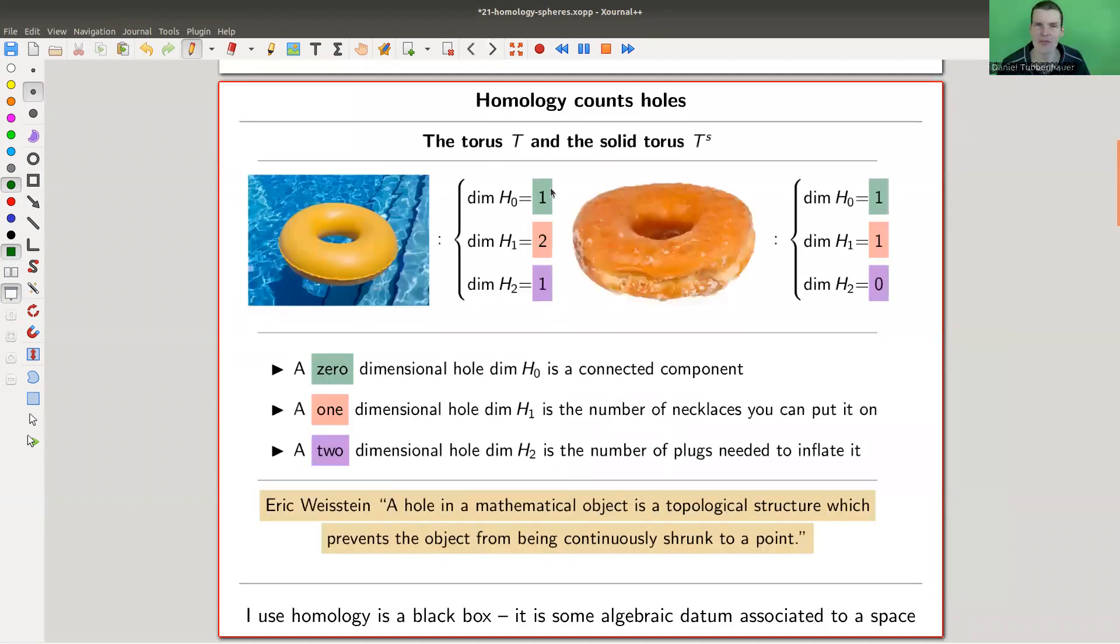So without trying to get too much into the details, there's an extremely important invariant in topology called homology. Homology spheres refers to homology. I'm not going to really explain what it is, but it's a great invariant and it essentially counts holes. So how many holes does your space have?